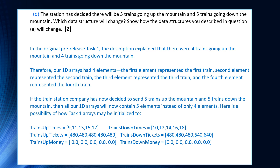Here is how the task 1 arrays may be initialized with five trains. trains_uptimes would be 9, 11, 13, 15, and 17. trains_downtimes would be 10, 12, 14, 16, and 18. trains_uptickets would have all five trains with 480 seats. trains_downtickets might have 480, 480, 480, 640, 640. And of course, the money arrays are still initialized to zero for all five elements going up and all five going down.